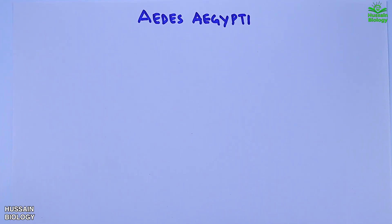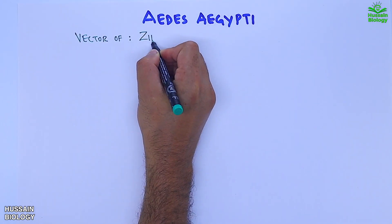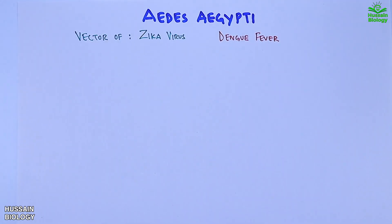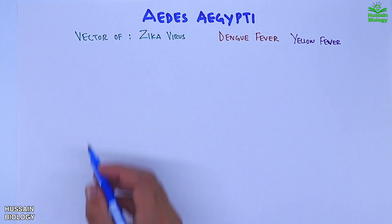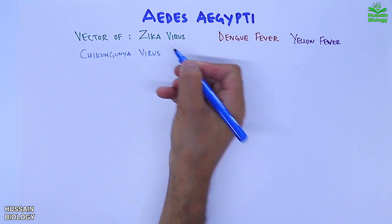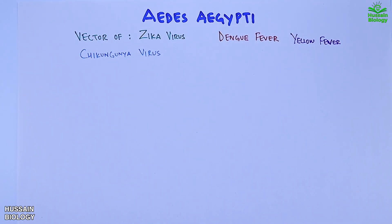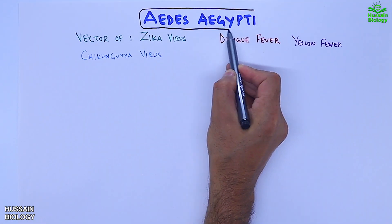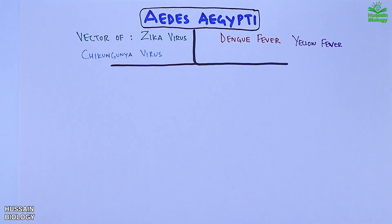Aedes aegypti is a vector of Zika virus, dengue fever, yellow fever, and chikungunya virus. It must be noted that we have two important subspecies of Aedes aegypti.